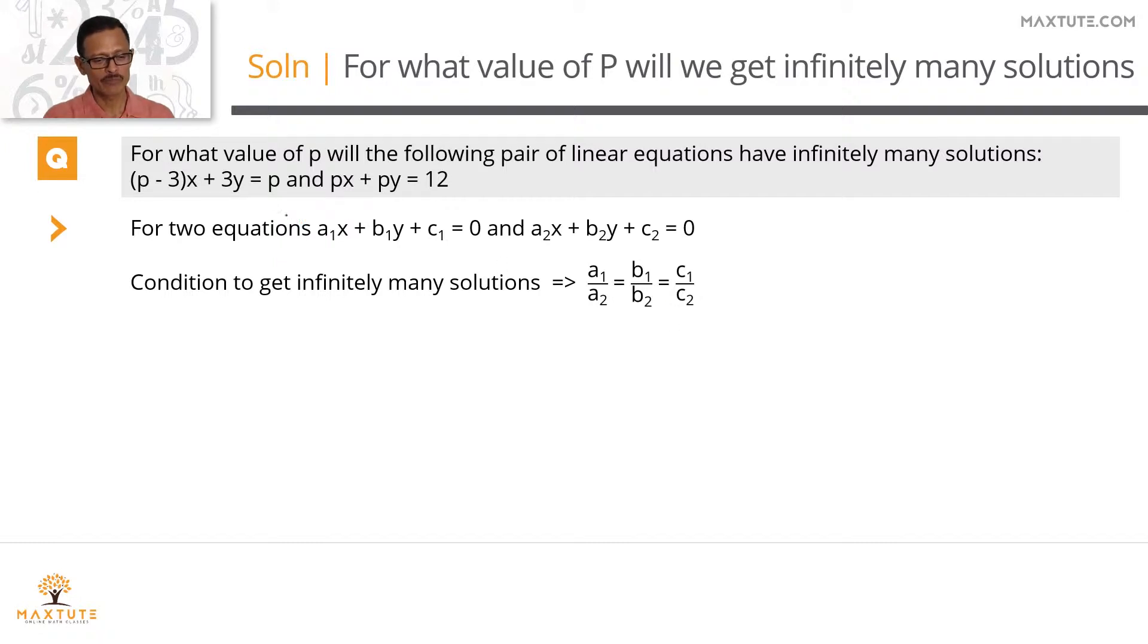So what we'll do is identify what these a1, b1, c1 are in these two equations, equate a1 by a2 to be equal to b1 by b2, and then repeat the same process and pick a matching value to get to the answer.